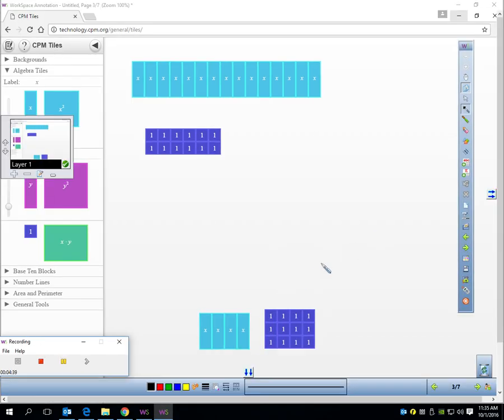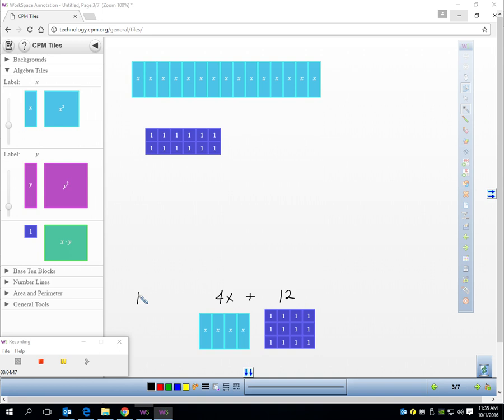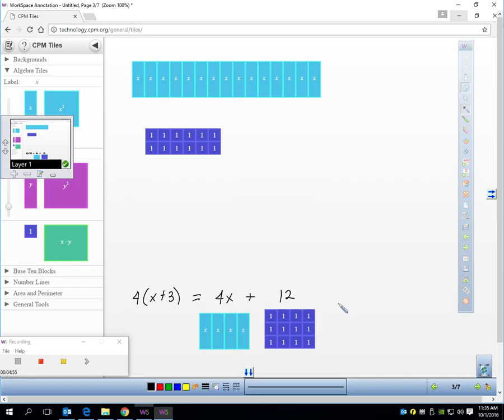So, now I've moved all these. Can you see where I'm getting 4x plus 12 when I take 4 and multiply it with (x + 3)? This is equivalent to that. And I just showed you with a picture.